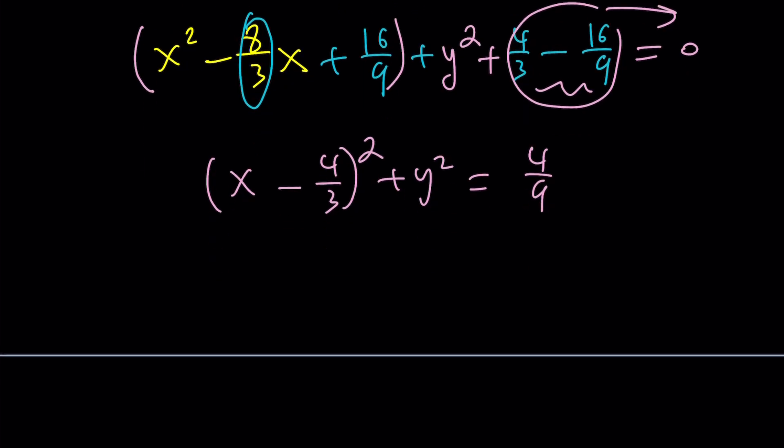What does that look like to you? If you said circle, yeah, you got it. This is the equation of a circle with center 4 thirds comma zero and radius 2 thirds. Because, remember, this is r squared, right? Great. So, the locus is a circle.